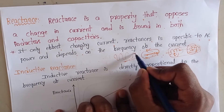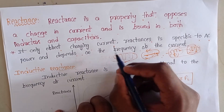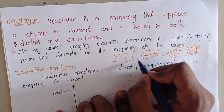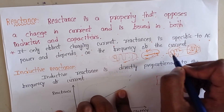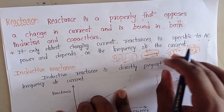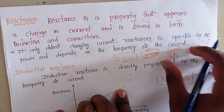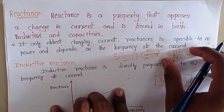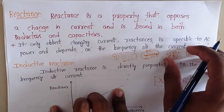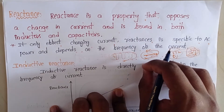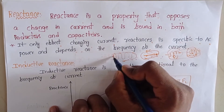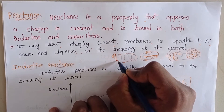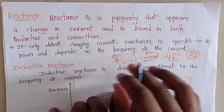When we apply alternating current — AC — to inductors and capacitors, then reactance will occur. Reactance is nothing but the opposing property of a sudden change of current. Here, the current is at one value and when it falls it is at another value — like that.